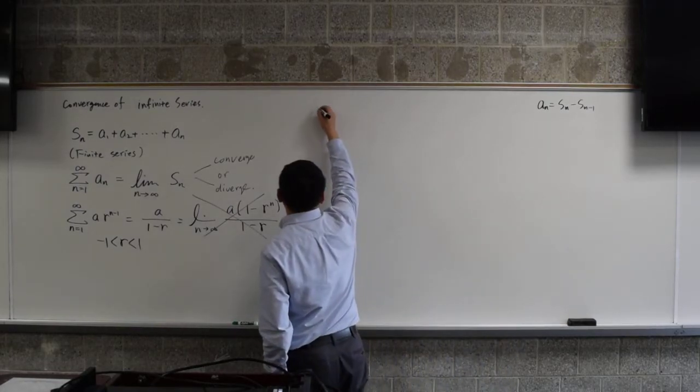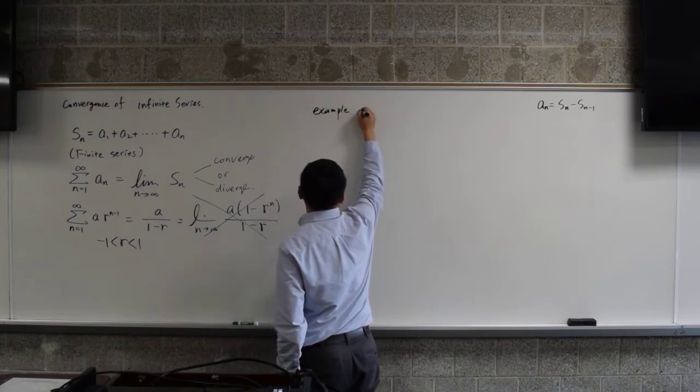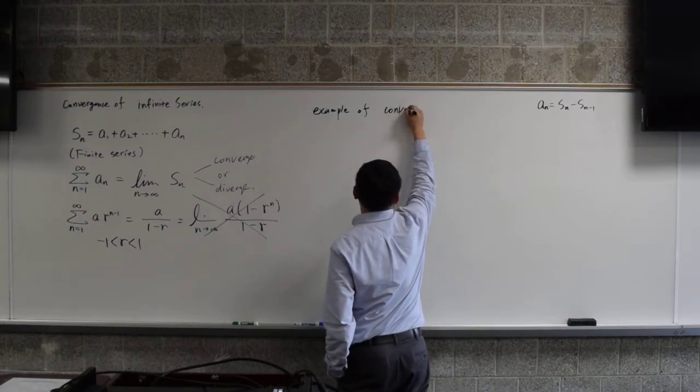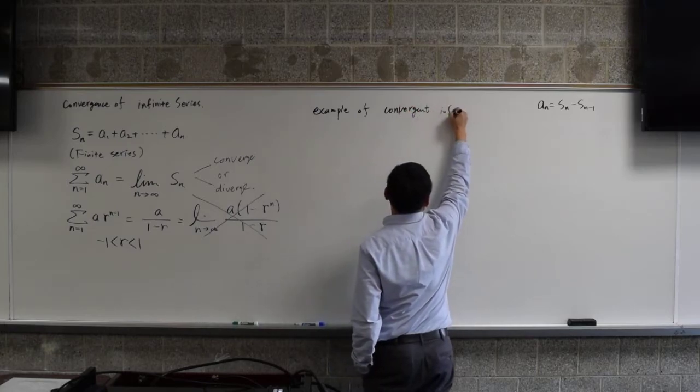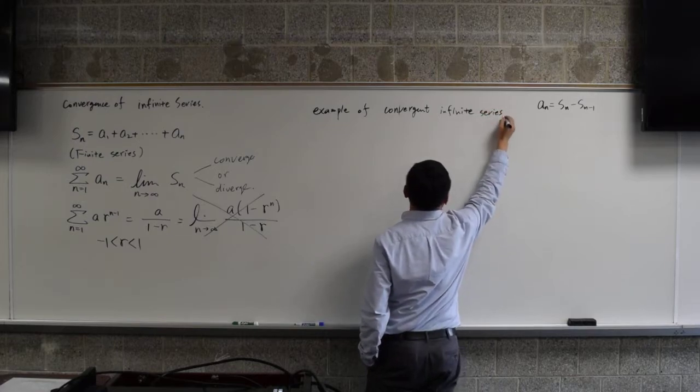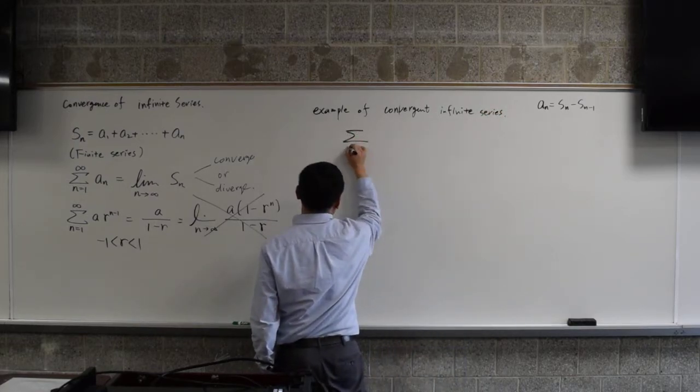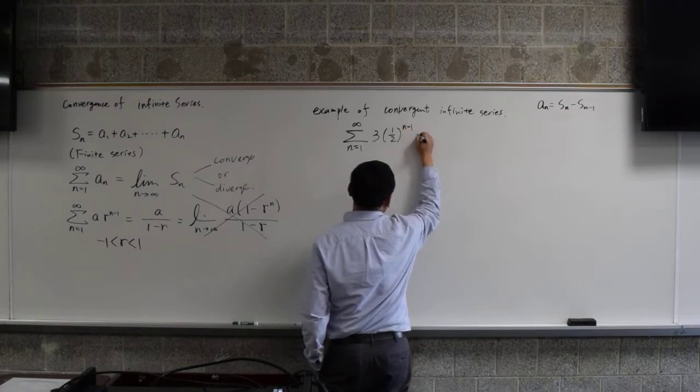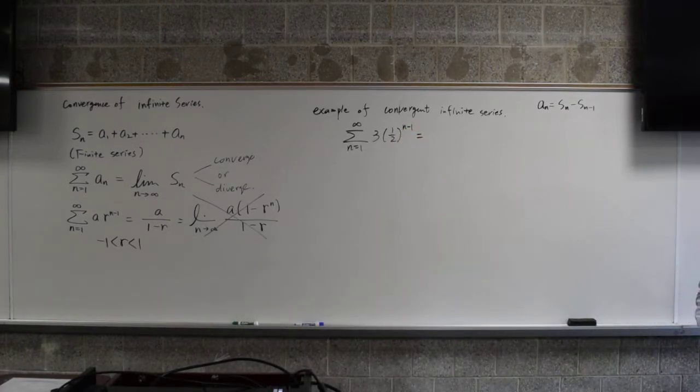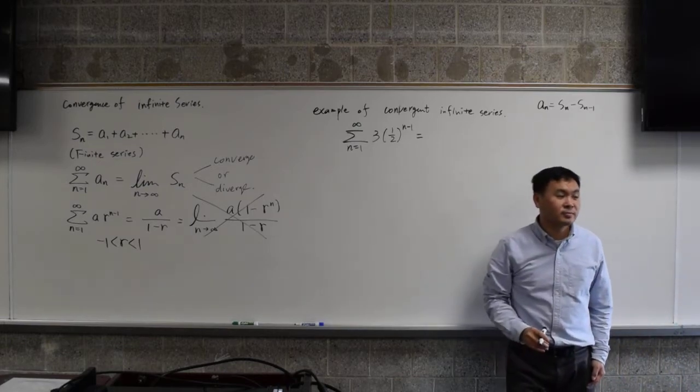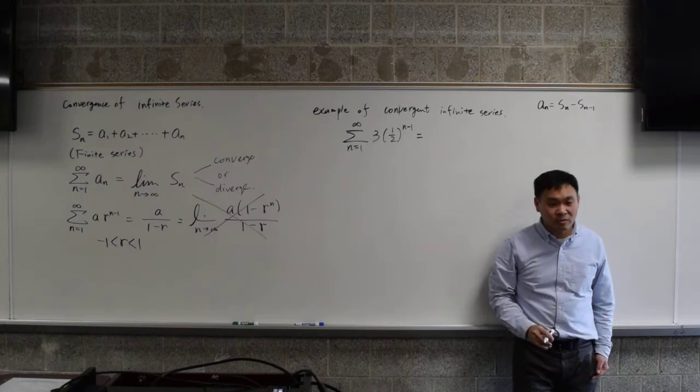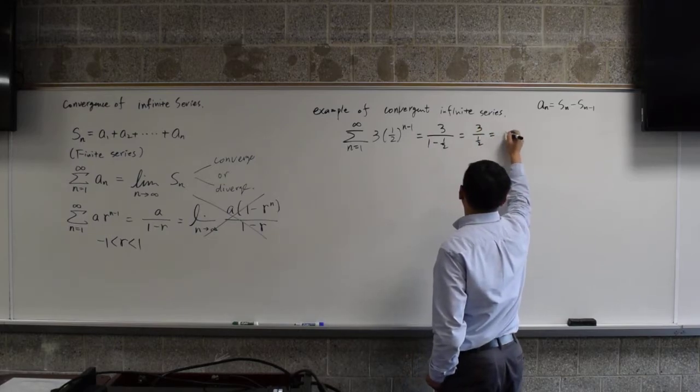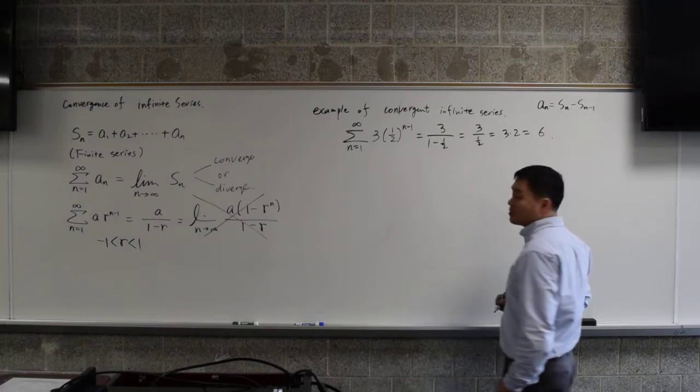So here's an example of convergent infinite series. n from 1 through infinity of 3 times (1 half)^(n minus 1). What's this limit? 3 over 1 minus 1 half, 3 times 2. So you get 6.